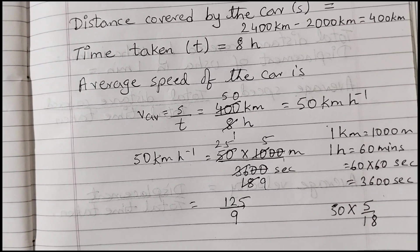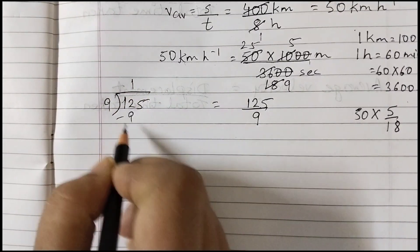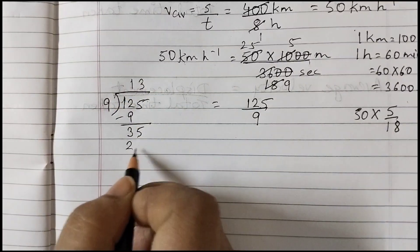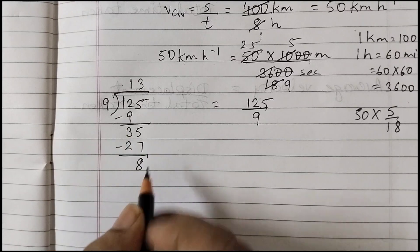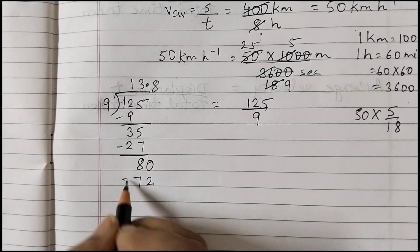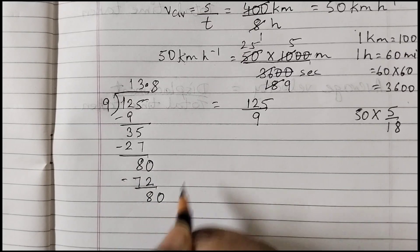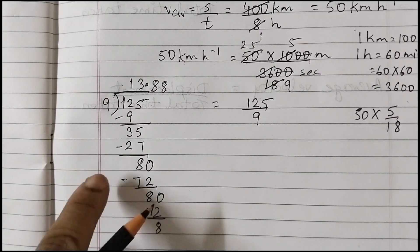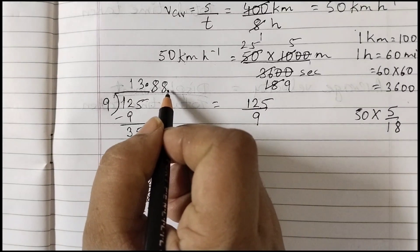Now we do the long division: 125 ÷ 9. Nine ones are 9; 12 minus 9 is 3; bring down 5 to get 35; 9 threes are 27; remainder 8. Since 8 is less than 9, put a decimal point. Then 9 eights are 72, giving remainder 8 again — so we keep getting 8. This gives 13.888... which repeats forever.